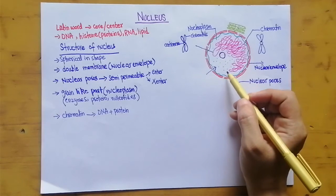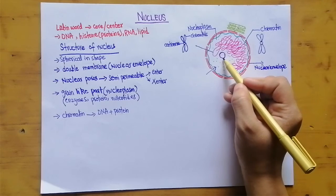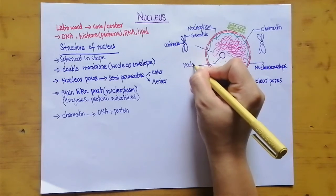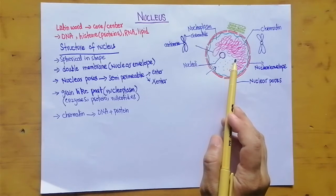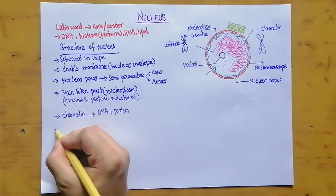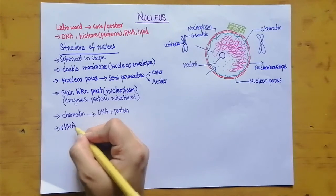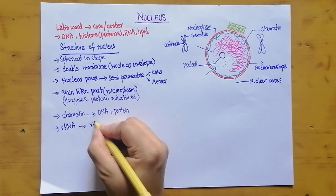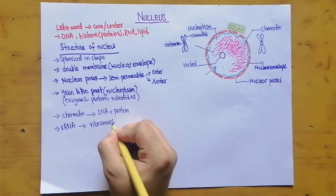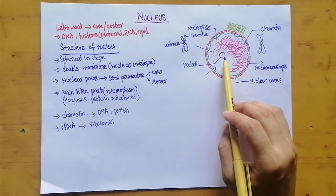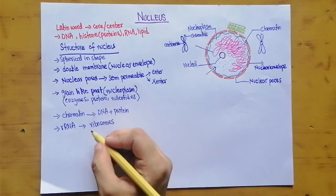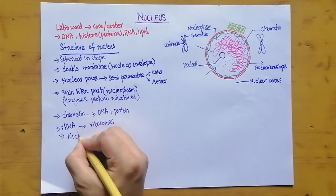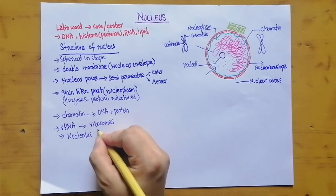Inside the nucleoplasm there are one or two nucleoli present. The nucleolus is a dark site where ribosomal RNA is produced, and these are combined together to form ribosomes. In other words, the nucleolus is the site for the synthesis of ribosomes. Nucleoli is the plural form; nucleolus is the singular form.